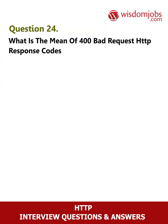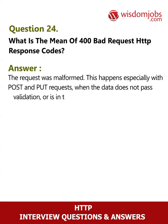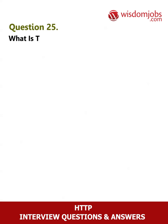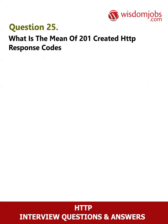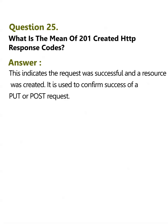Question 24: What is the meaning of 400 Bad Request HTTP response code? Answer: The request was malformed. This happens especially with POST and PUT requests when the data does not pass validation or is in the wrong format. Question 25: What is the meaning of 201 Created HTTP response code? Answer: This indicates the request was successful and a resource was created. It is used to confirm success of a PUT or POST request.